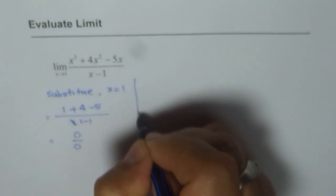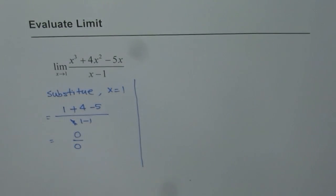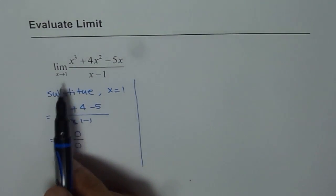So whenever you get 0 over 0, you cannot really find limit by substitution. It indicates a discontinuity at x equals to 1.